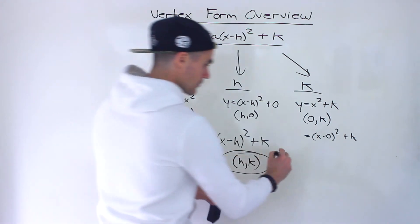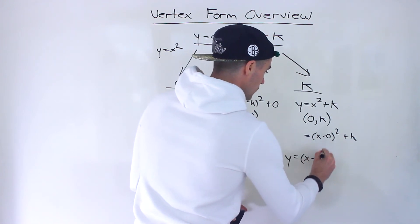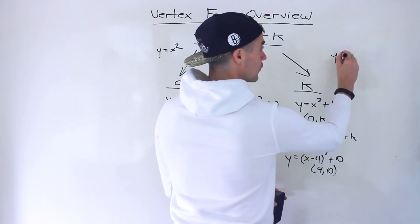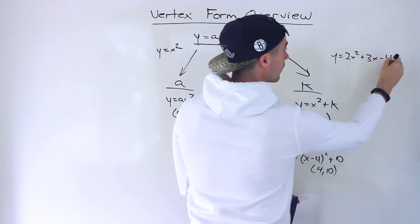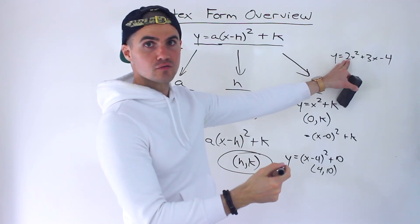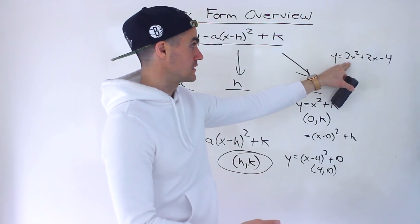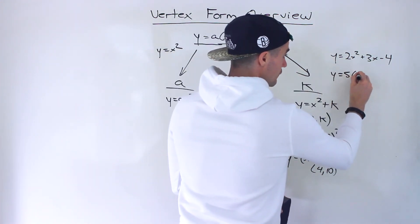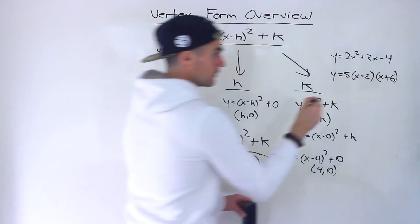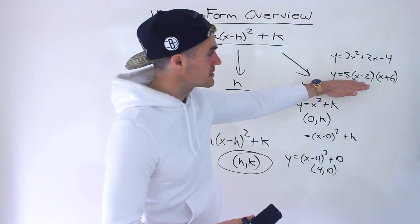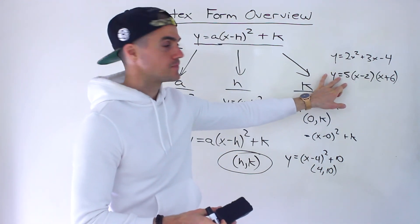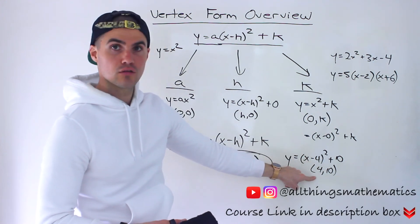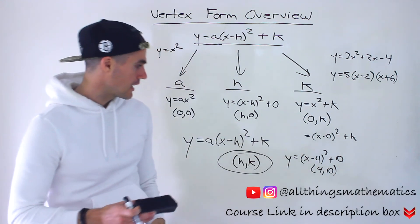We can't do that with standard form. For example, if we have x minus 4 squared plus 10 in vertex form, we know the vertex is (4, 10) immediately. However, if it's in standard form like 2x squared plus 3x minus 4, we can't get the vertex right away — there's work we'll have to do, and we'll go through methods for that. Or if it's in factored form like (5x minus 2)(x plus 6), that's another form quadratics can take, and again we can't read the vertex straight from the equation. But if it's in vertex form, we can get the vertex right away.